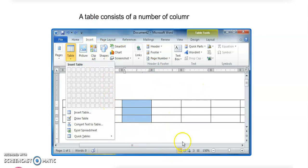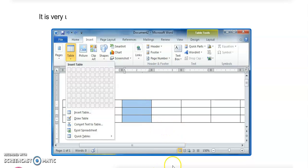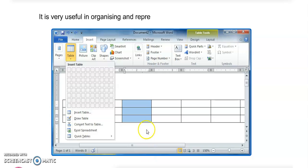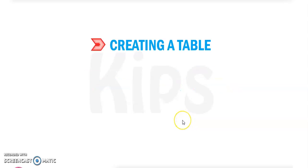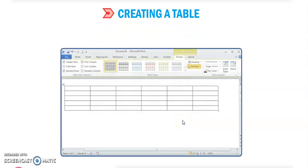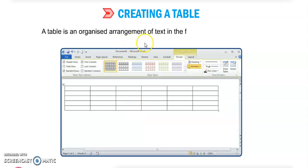This is a table. A table consists of a number of columns and rows. In a table there are some columns and rows, and it is very useful in organizing and representing data in an effective manner. A table is an organized arrangement of text in the form of rows and columns.